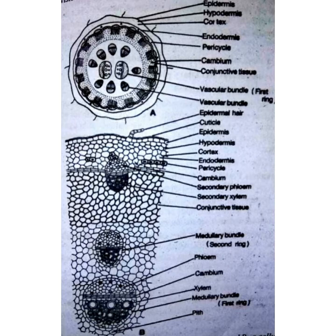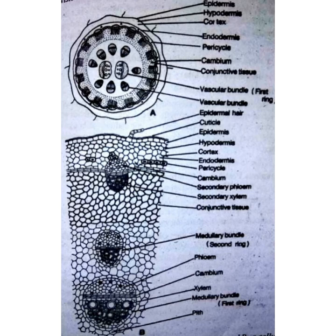Now for the anomalous structure of Boerhaavia diffusa: you can see in the figure that the transverse section shows two medullary bundles. The bundles of the middle ring increase in thickness to a limited extent by interfascicular cambium. The cambium then ceases to function — meaning the activity of cambium is stopped — and new medullary bundles arise in the secondary parenchymatous tissue, repeating at intervals. It also has interxylary phloem and medullary bundles. These are the anomalous structures of Boerhaavia diffusa.